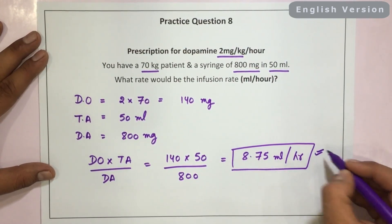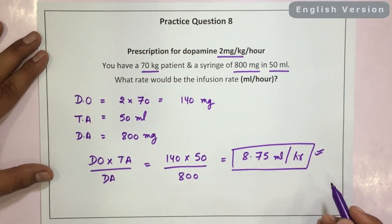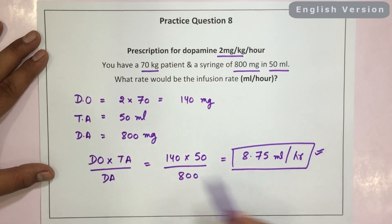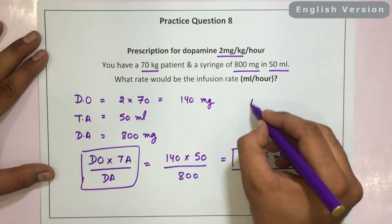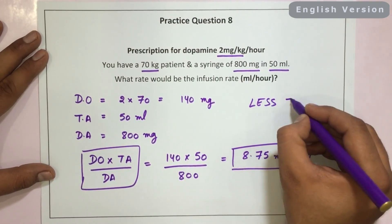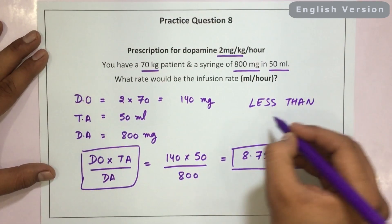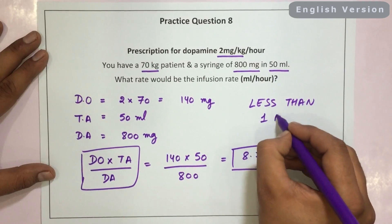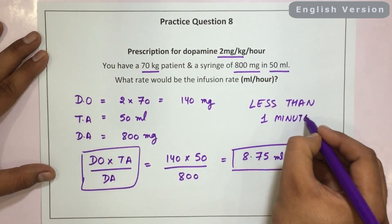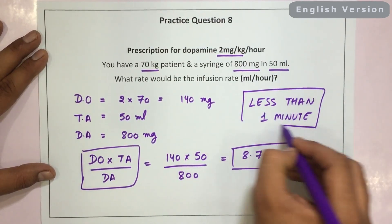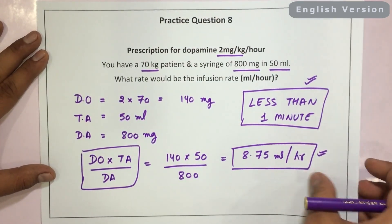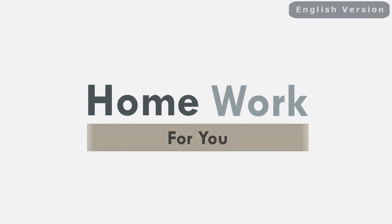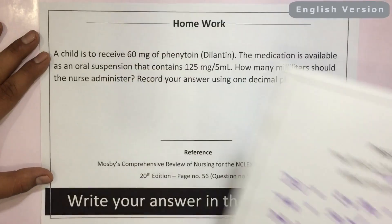When we calculate it, it comes out to be 8.75 ml per hour. So this should be the infusion rate. Using this simple formula, we can do these kinds of questions in less than 1 minute. I hope you understand these questions.